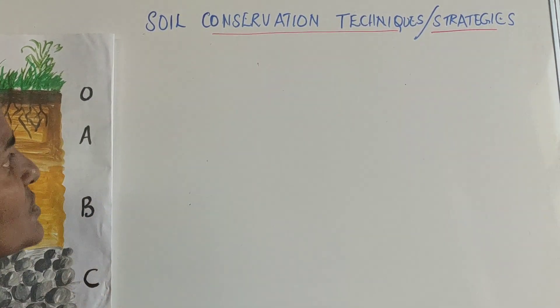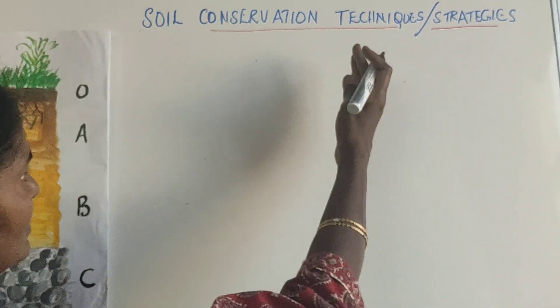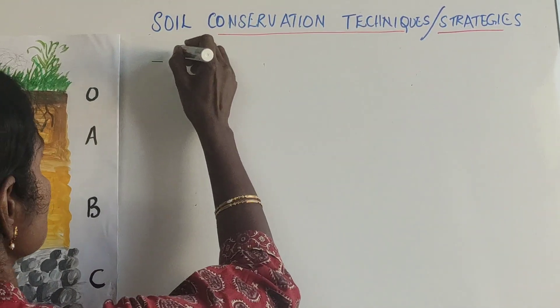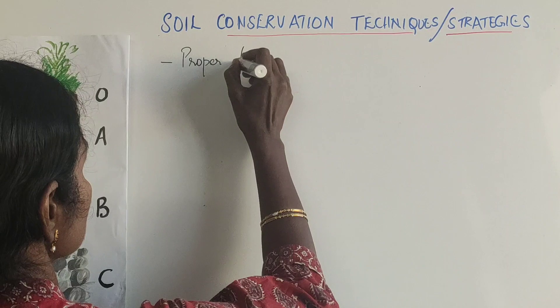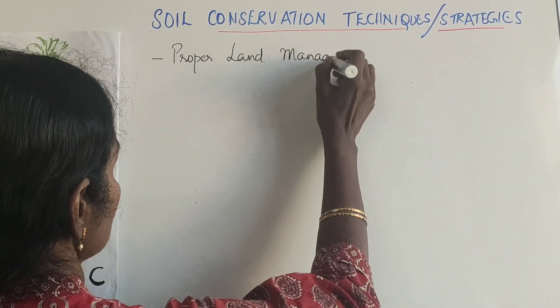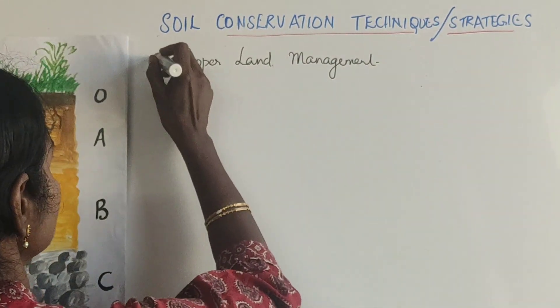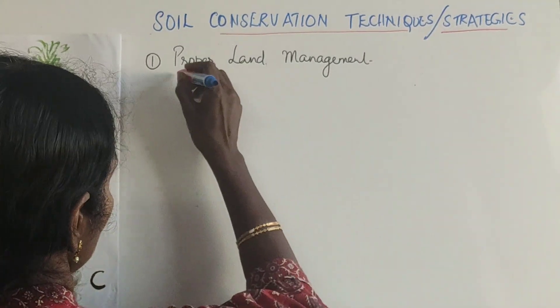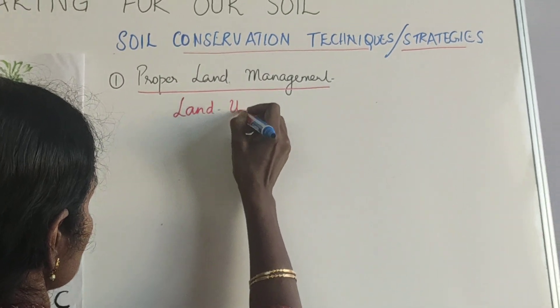Now we move on to the different soil conservation techniques or strategies — the methods we use for soil conservation. The first one is proper land management, also called land use management.